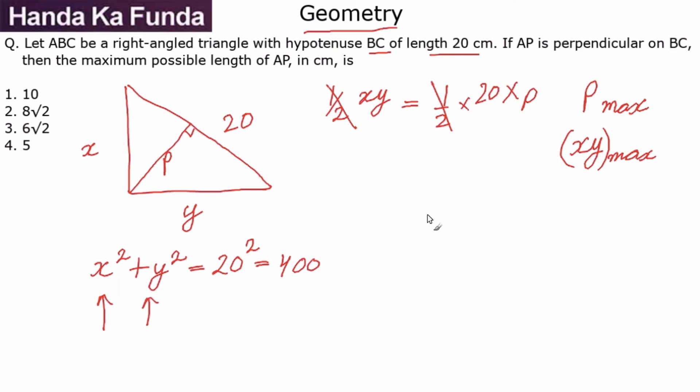For any two terms, we know that their arithmetic mean is greater than or equal to their geometric mean. What is the arithmetic mean of X² plus Y²? It will be (X² + Y²)/2. And what is that? (X² + Y²)/2 is 400/2, or this is 200, which is greater than or equal to √(X²Y²), which is nothing else but XY.